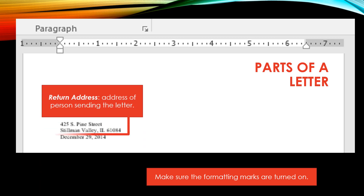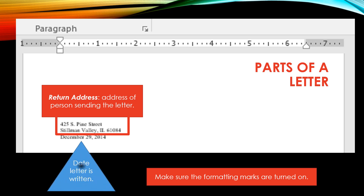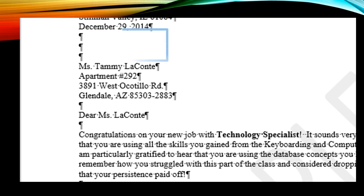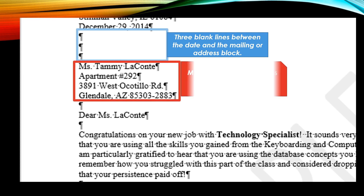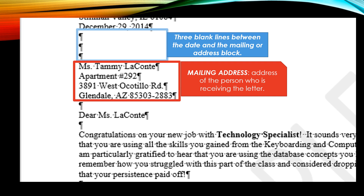Parts of a letter. The return address is the address of the person who is sending the letter. The date of the letter is written or typed right after the city, state, and zip code of the person sending the letter. After the date, leave three blank lines between the date and the mailing or address block. Here is the mailing address — this is the address of the person who is receiving the letter. You will need the person's name, address, street address, city, state, and zip.